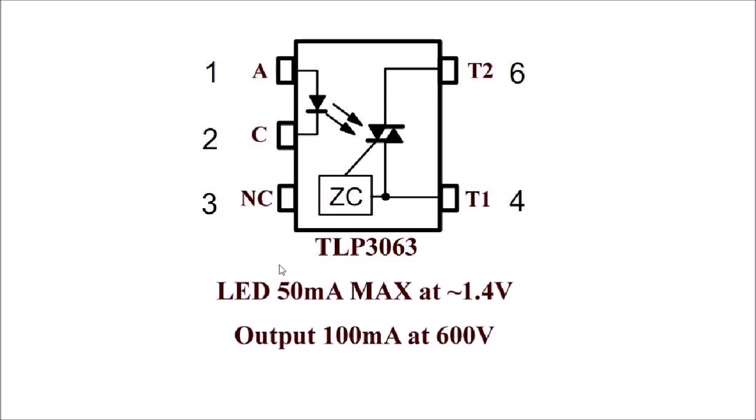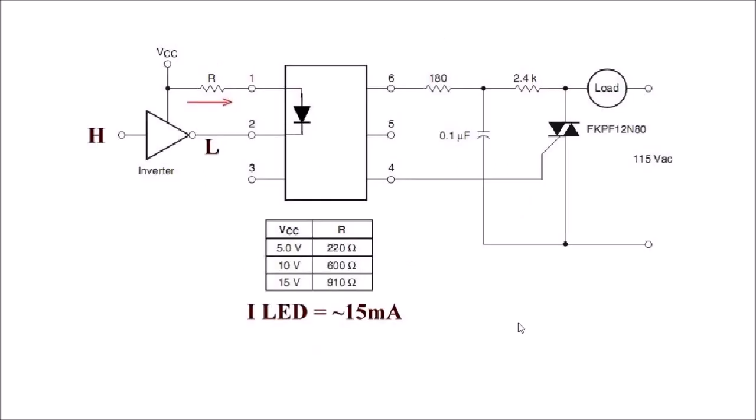Alright, so we got LEDs on the input. You certainly cannot connect 32 volts directly to an LED. Let's look at how we get around that kind of problem.